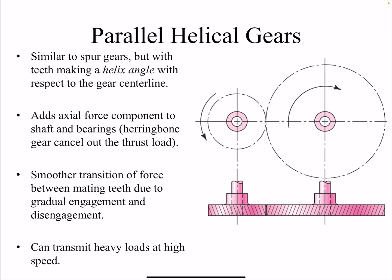Helical gears are similar to spur gears and are used for transmitting power between two parallel shafts. One major difference is that helical gears create an axial load, also referred to as thrust load. If herringbone gears are used — putting two helical gears back to back — we can cancel the thrust load, but that's not very common. Despite the axial load disadvantage, helical gears can carry larger torques and have a smoother transition of power from one shaft to another.